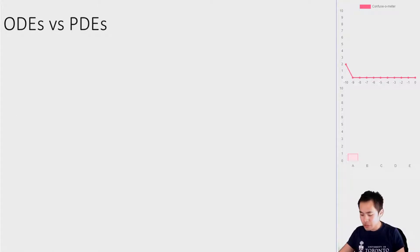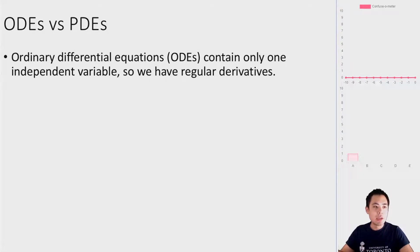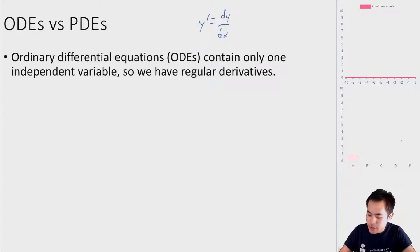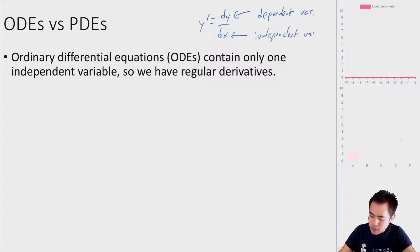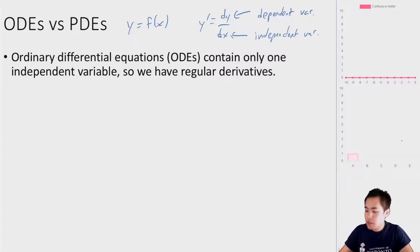We have ordinary differential equations and partial differential equations; we're only going to talk about ordinary differential equations. These contain only one independent variable and regular derivatives. For example, in dy/dx, y is the dependent variable and x is the independent variable. You can also write it as y = f(x). Ordinary differential equations only contain one independent variable and all the derivatives of some other function.